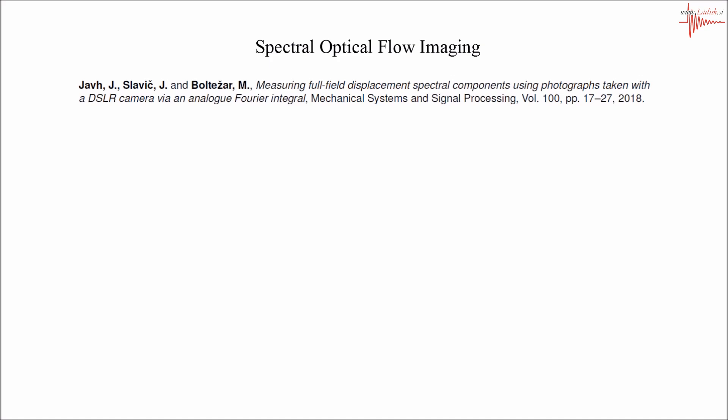It works by performing an analog Fourier transform during the image acquisition. Fourier transform is defined as an integral of the signal modulated with the harmonic. When the camera takes an image, it basically performs an integration of radiance over the exposure time.